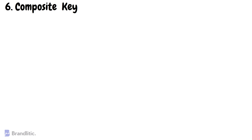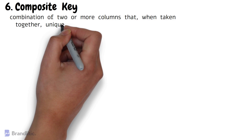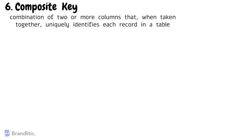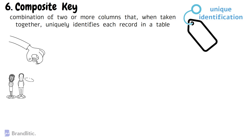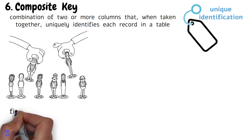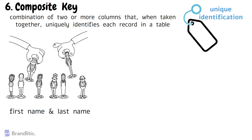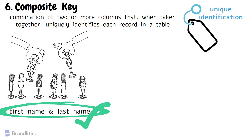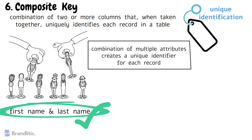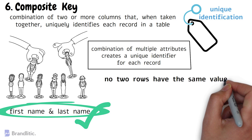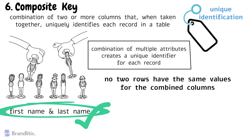Next: what is a composite key? It is a combination of two or more columns that, when taken together, uniquely identifies each record in a table. It's like a tag that combines multiple attributes to create a unique identification for each row. For example, imagine you have a table of students and you want to ensure that no two students have the same combination of first and last name. In this case, you can create a composite key by combining the first name column and the last name column. This composite key will guarantee that each student has a unique identifier based on their first and last name, ensuring that no two rows have the same values for the combined columns.